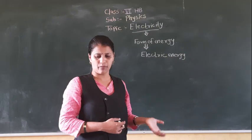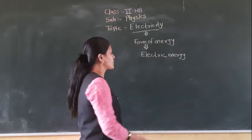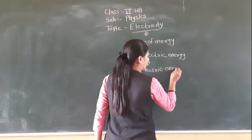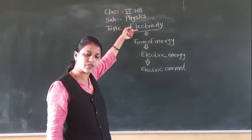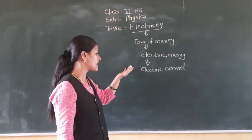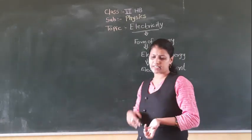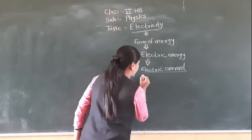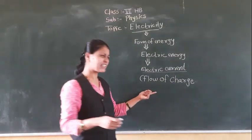Electric energy is produced by electric current. So what is electric current? The flow of charge. When water falls from a slope we call it the current of water. Similarly, when we apply some force to charge to move, that flow of charge is called electric current.